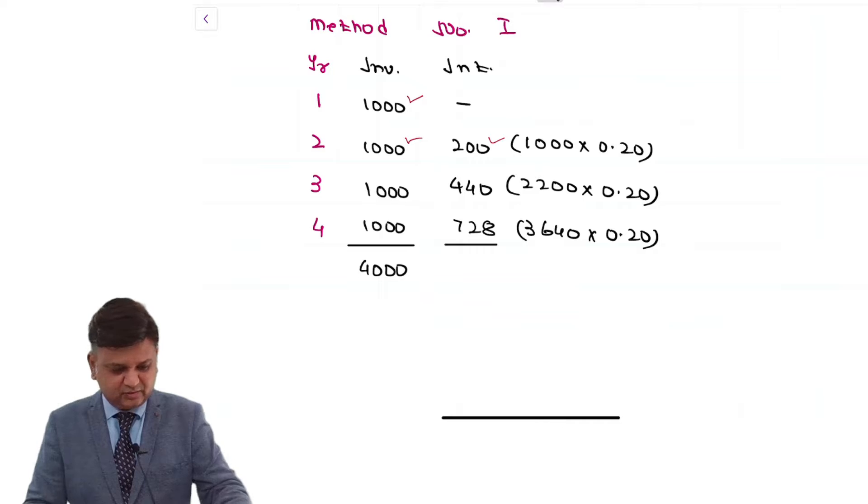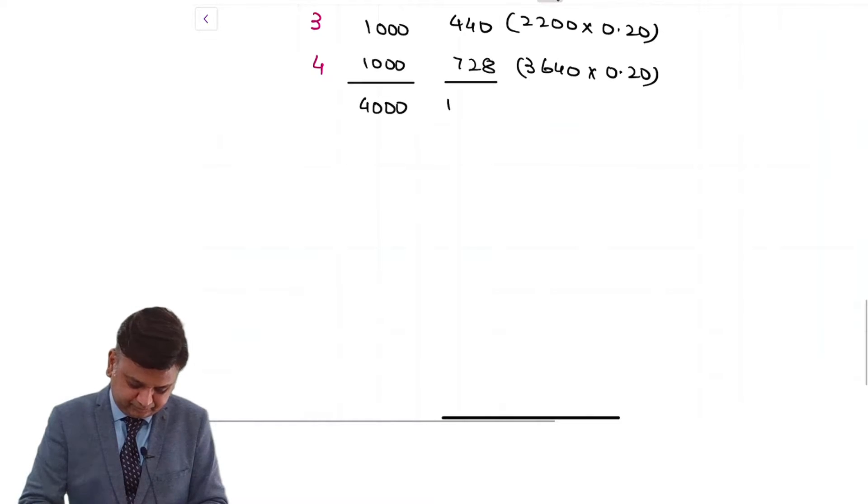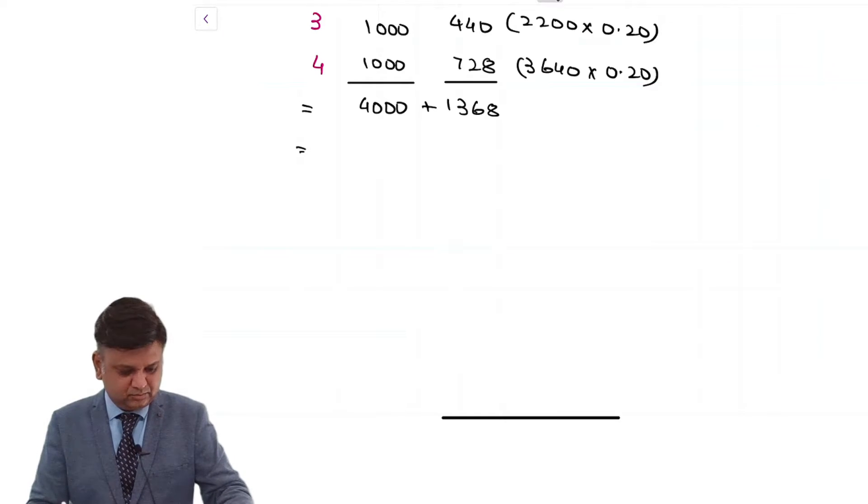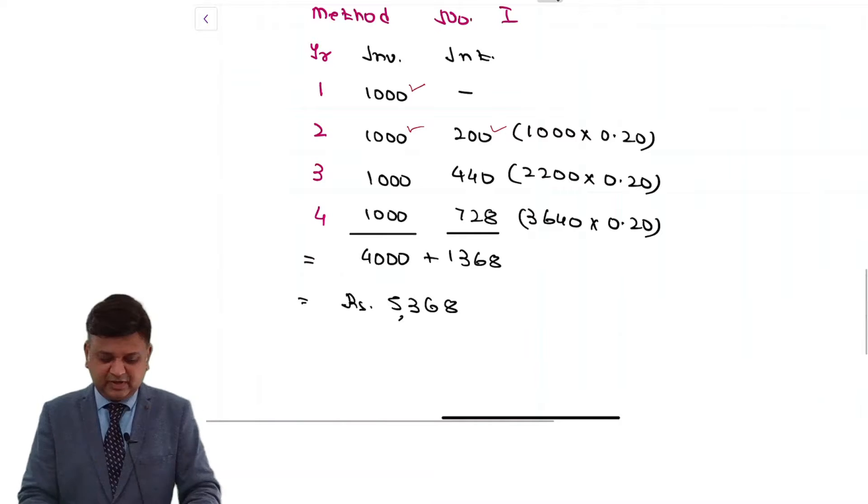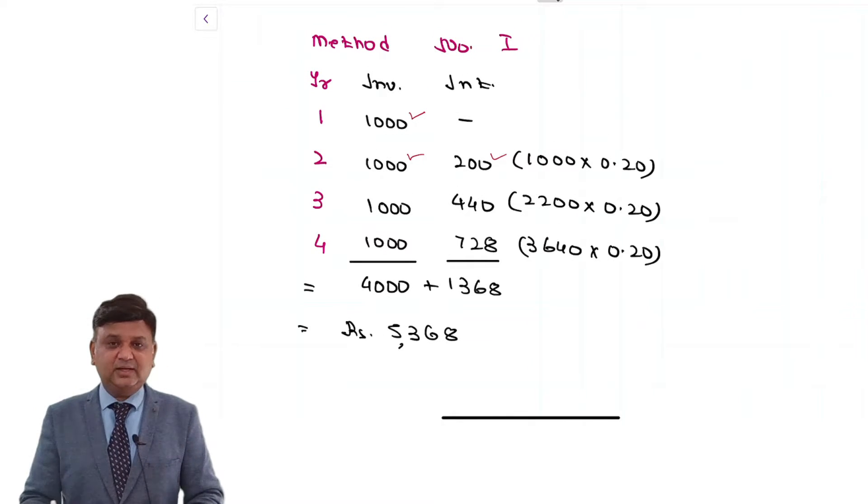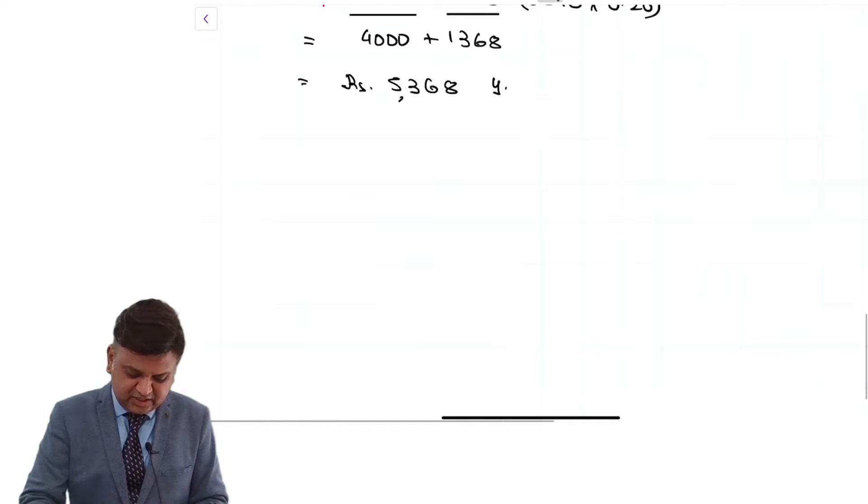So 200 plus 440 plus 728. That is 1368. So 5368. So we understand that this is a simple method by which we can compute the maturity amount of deposit year 4.